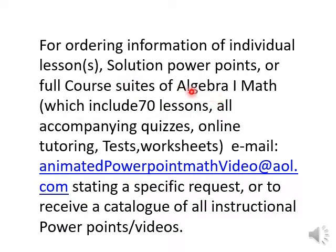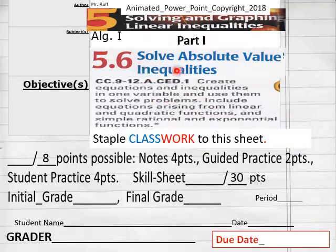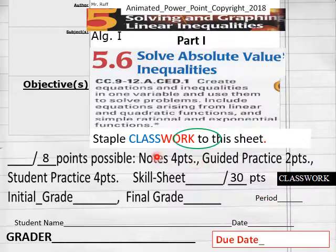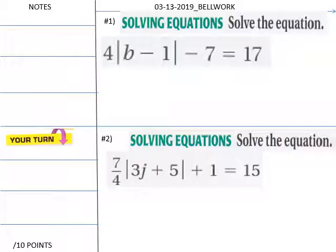Hello everybody, we're getting ready to do lesson 5.6 Algebra 1. I'm going to do part one; if you want part two or part three, email me. 5.6 Solve Absolute Value Inequalities, this is part one. Here is the standard, we have a 30-point skill sheet and an eight-point notebook guide. Teachers, here's your bell work for today.